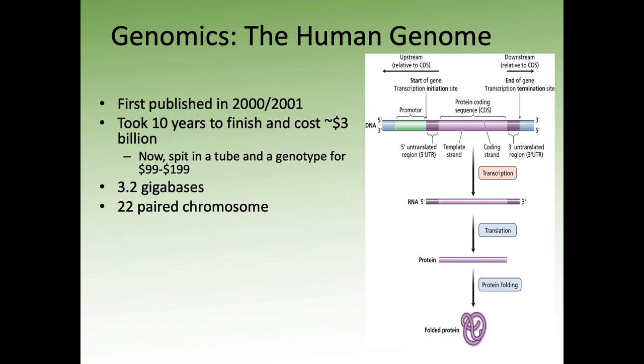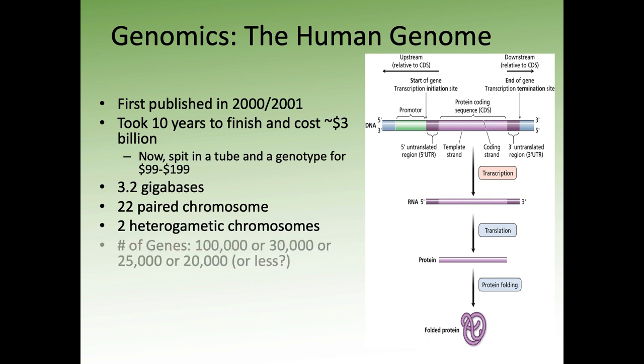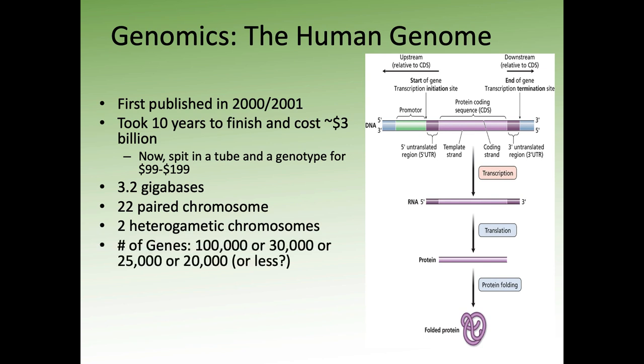Thinking about the characteristics of the human genome: it's 3.2 billion bases long. There are 22 paired chromosomes or autosomes, and two heterogametic chromosomes — the X and the Y. How many genes does it have? Back in the day we thought about 100,000 genes, then 30,000, then 25,000, then 20,000. Now we think it might be less — more likely around 18,000 or 19,000. The number does change periodically.